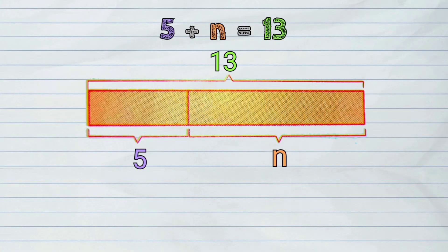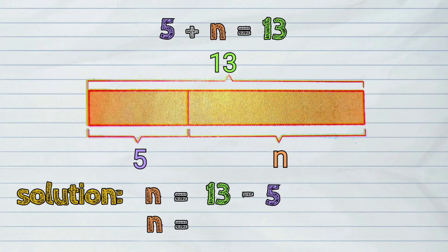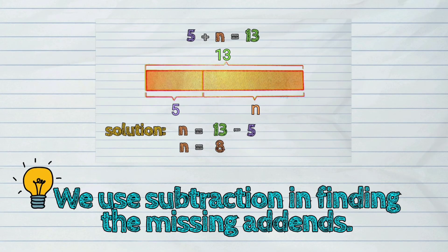Notice that n can actually be obtained by subtracting the number 5 from the number 13. So the solution will be n equals 13 minus 5. The answer is 8. We can therefore conclude that we use subtraction in finding the missing addends.